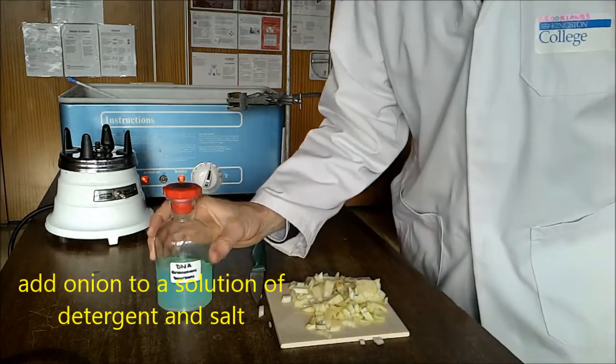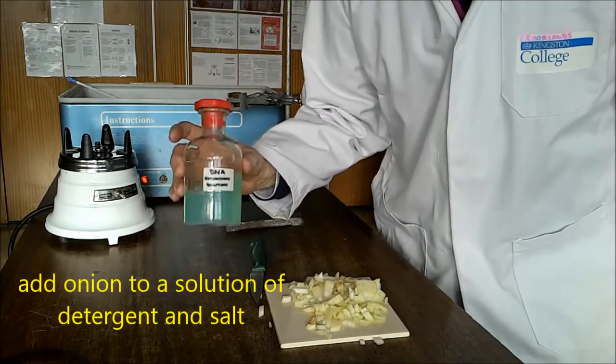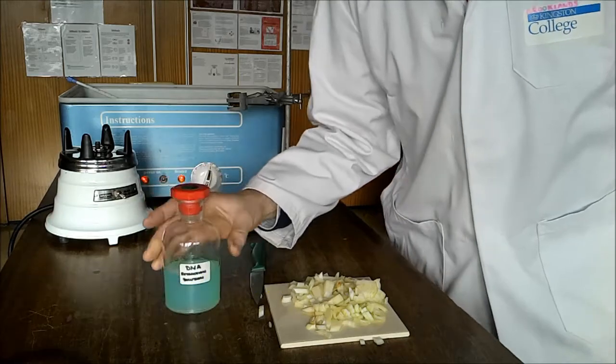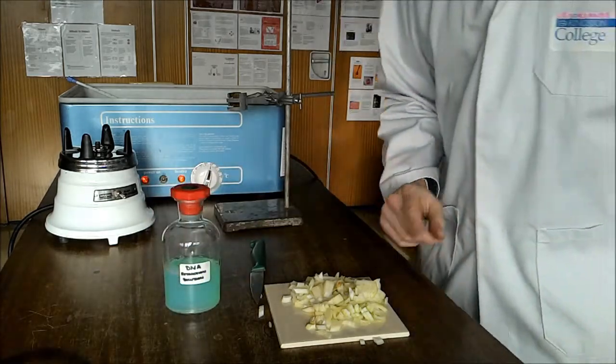We're going to put 100ml of the detergent and salt mixture onto the onion.